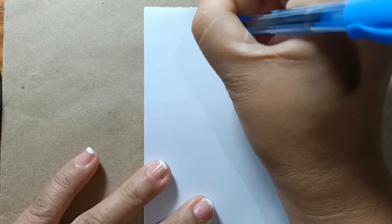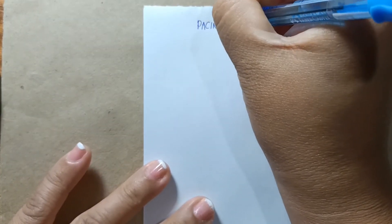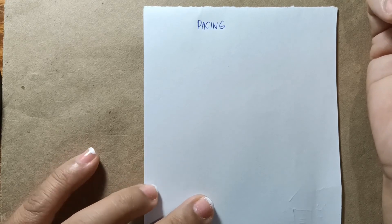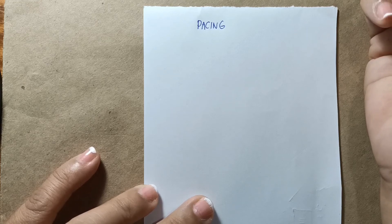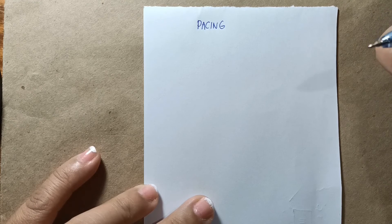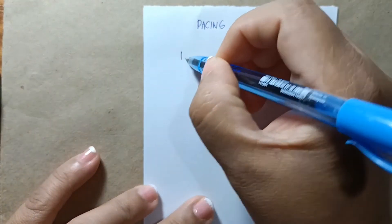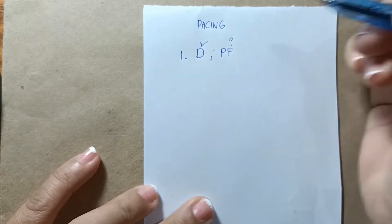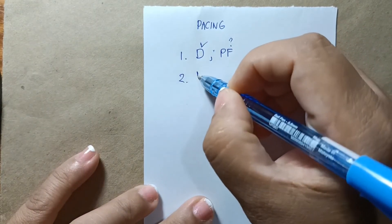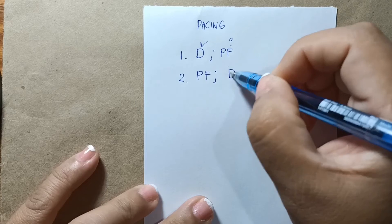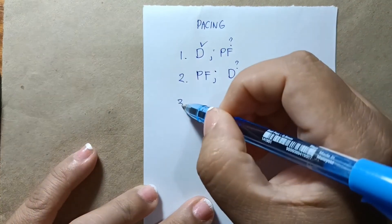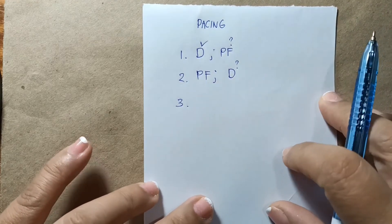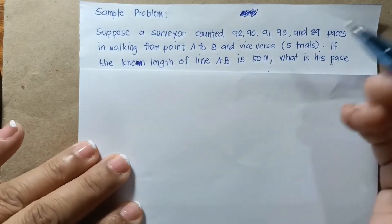This topic is about pacing. Problems on pacing can be divided into three categories depending on the given and the required. One: you are given the known distance and required to solve the pace factor. Two: you are given the pace factor and required to solve the known distance. Three: the two are combined, which is more complicated. We will do them one by one.